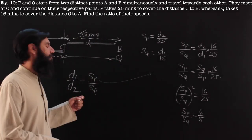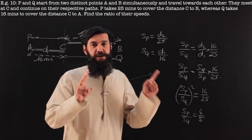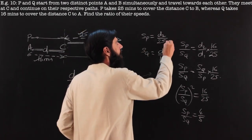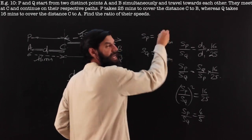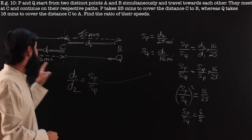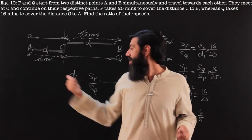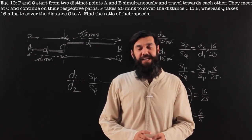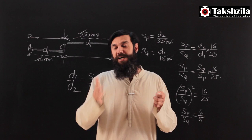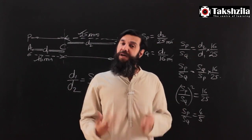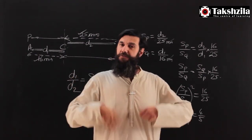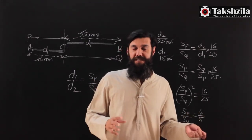We can even mark this up as a formula, but I don't think we need to. Just keep in mind there are two sets of data: one is the 25 minutes and 16 minutes that they take, and the other is that they start simultaneously and meet at C. The units — minutes — don't matter because we are taking a ratio and they cancel out. These starting-and-meeting scenarios will come back again in relative speed. We will be solving questions both ways — proportionality as well as relative speed.